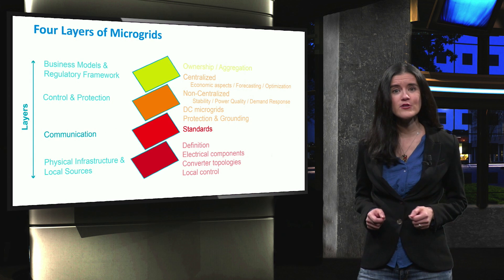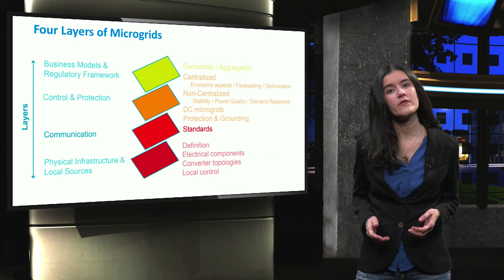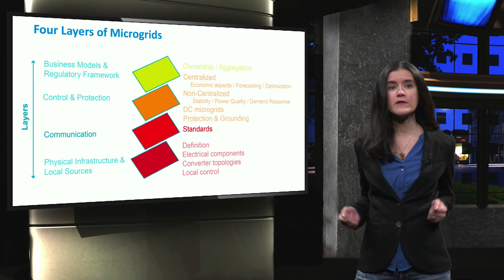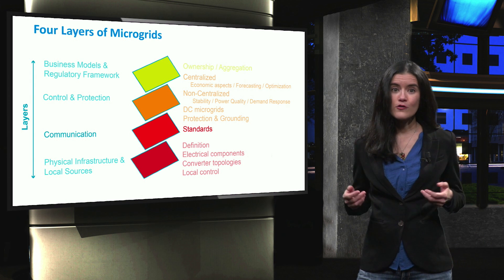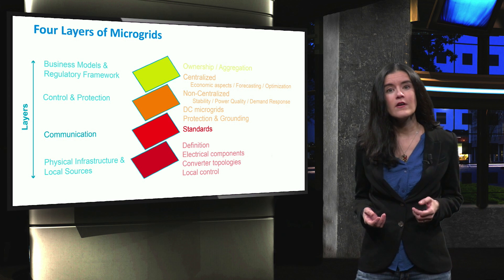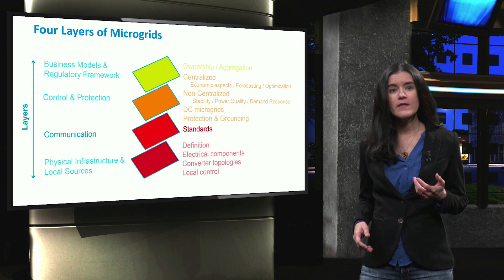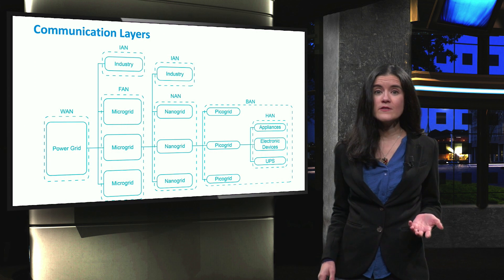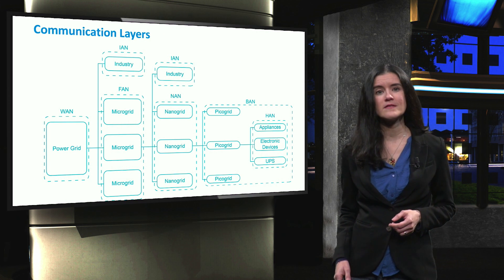The communication layer is in charge of providing all the information regarding the status of the physical layer to the control and protection layer. This allows the control and protection layer, also called the intelligence layer, to properly carry out its functions. The proper choice of the communication network for each electrical grid depends mainly on its size.